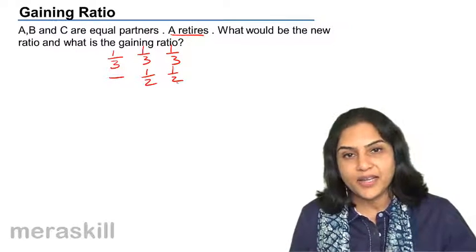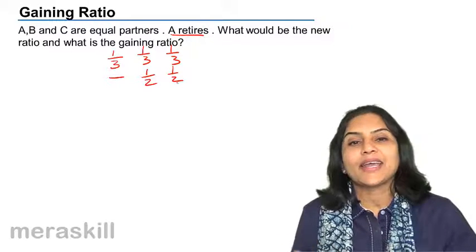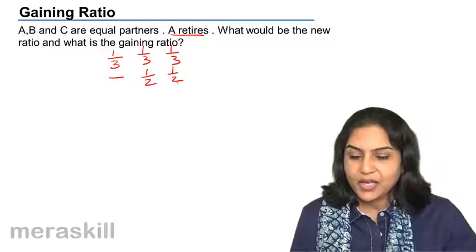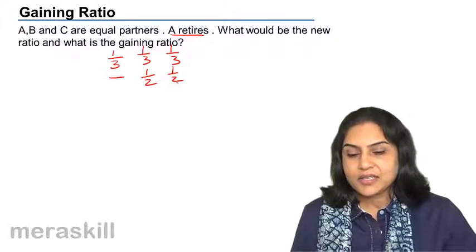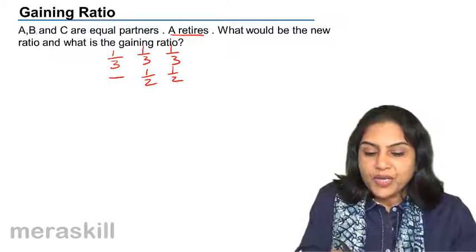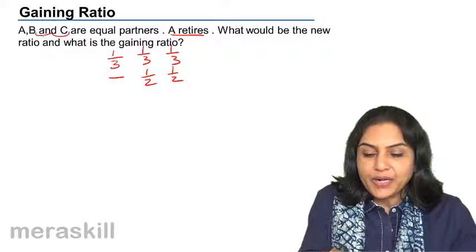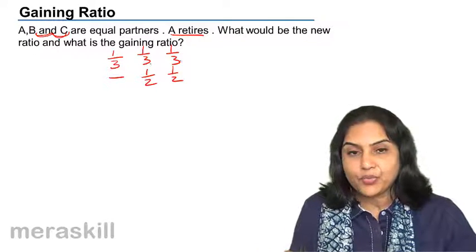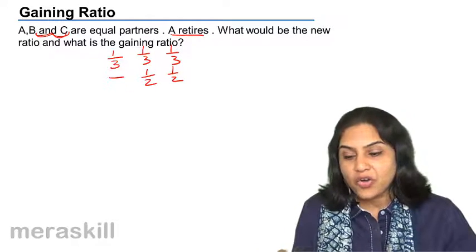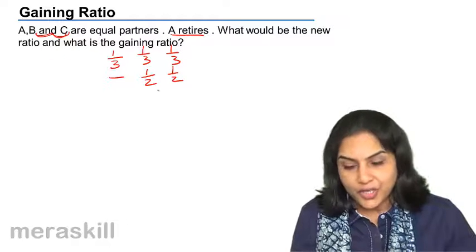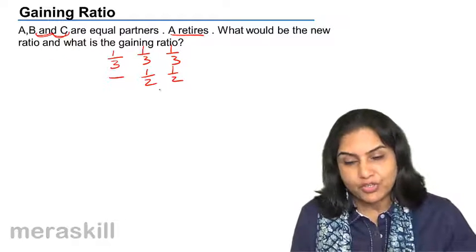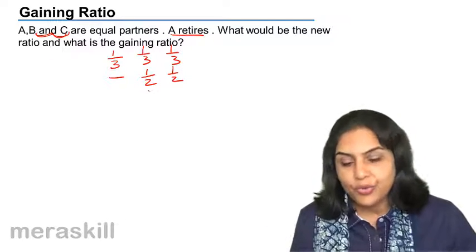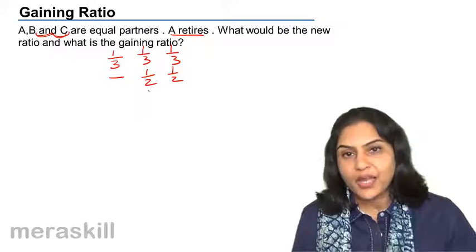So what is the gaining ratio? The gaining ratio will also be equal. Since the ratio between the remaining partners — what was their old ratio between them? One third, one third, one third — equal. The new ratio is also equal. Therefore, the gaining ratio will also be equal.